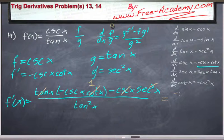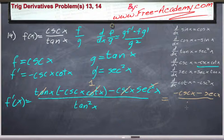So this is going to give us negative cosecant of x minus secant of x over tangent squared of x. Nice and clean, very quick.